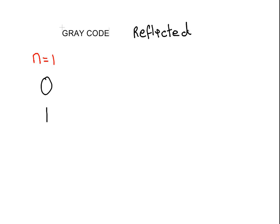It reduces errors and stuff like that. It's quite important for that particular reason. It's also called reflected binary code.